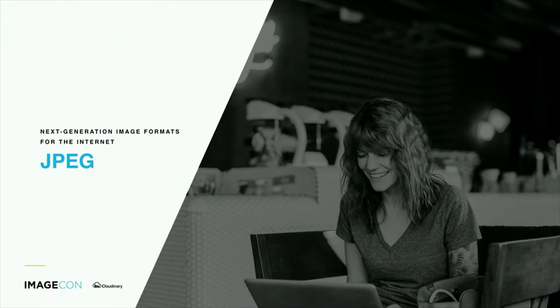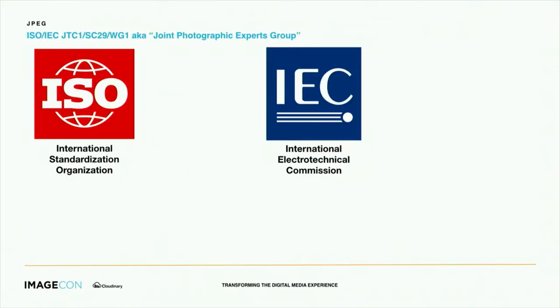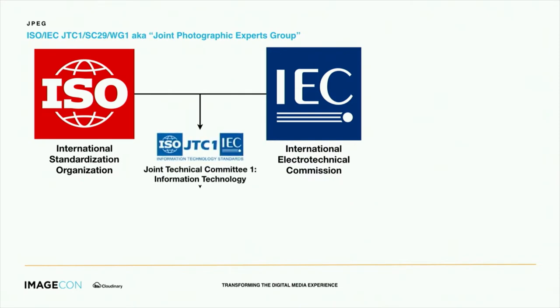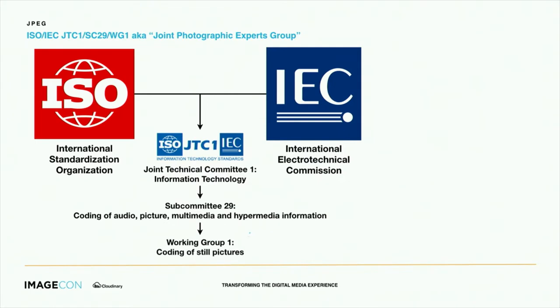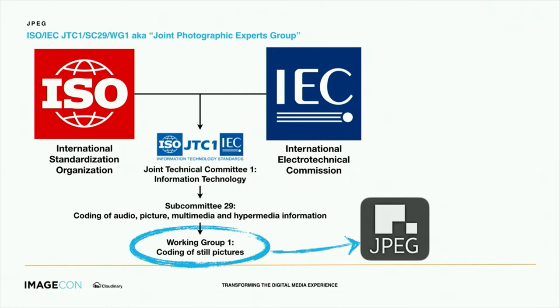So JPEG. What is JPEG? We already learned a lot about it in the previous talk. But JPEG is actually a committee — Joint Photographic Experts Group — which is basically the ISO and IEC, who have a Joint Technical Committee, which has a subcommittee, which has a working group. And this working group is what we call JPEG, because it's much easier to say than ISO, IEC, JTC1, SC29, working group 1.